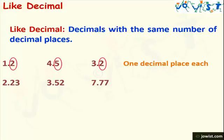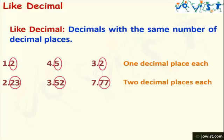Let's take one more example. We have the numbers 2.23, 3.57, and 7.77. In these three numbers, they have two decimal places each, so these three numbers are like decimal numbers.